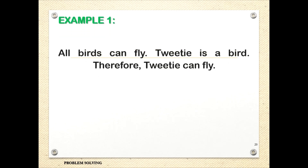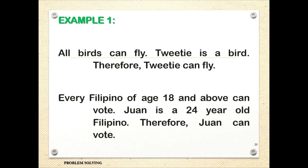Example 1 of deductive reasoning: All birds can fly — and we apply this to a specific bird, Twitty. Therefore, Twitty can fly. Next: every Filipino of age 18 and above can vote. Juan is a 24-year-old Filipino. Therefore, Juan can vote. We started with a general case — every Filipino of age 18 — then went to a specific Filipino, Juan. So from general to specific.